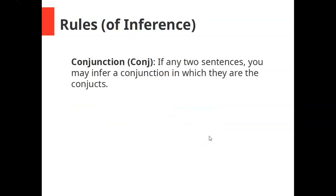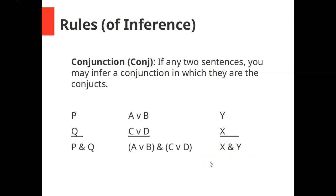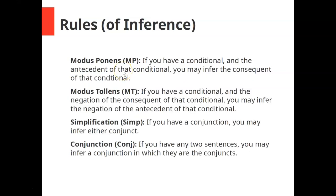Fourth and final rule for this video: the rule of conjunction. If you have any two sentences, you may infer a conjunction in which they are the conjuncts. So if you have P and you have Q, you're allowed to infer P and Q. If you have A or B and C or D, you're allowed to infer a conjunction of those two things. It doesn't matter what order they come in — you can still infer a conjunction of them in whatever order you'd like.